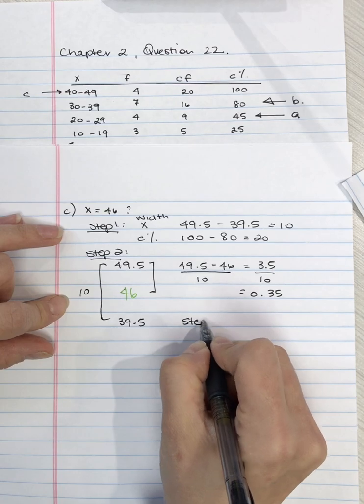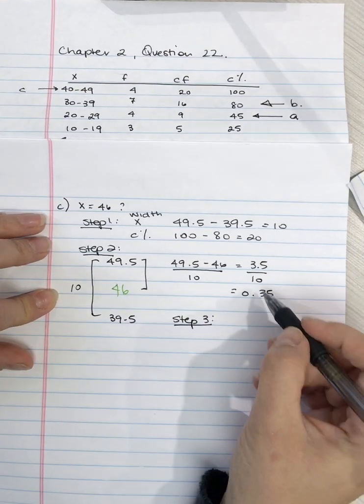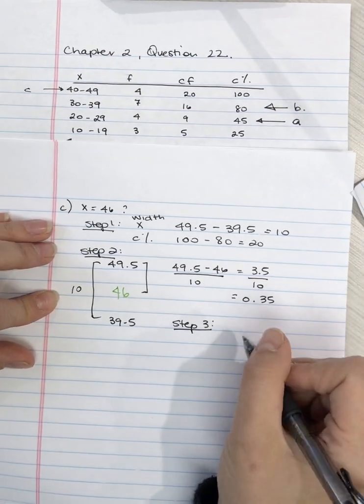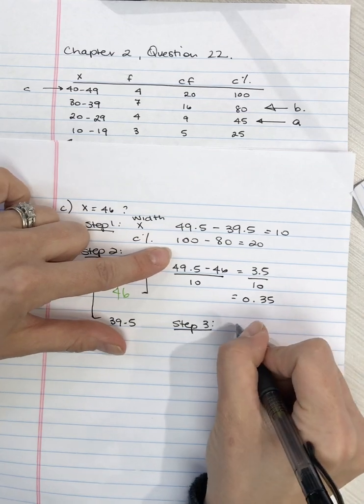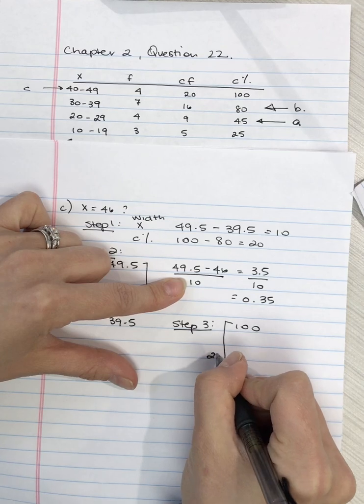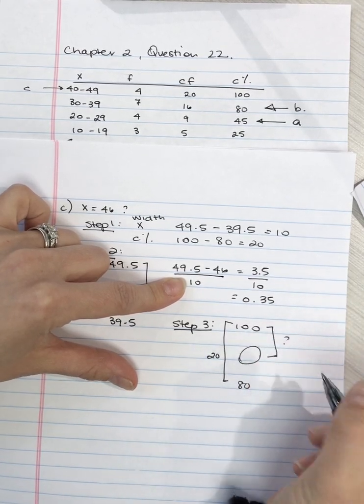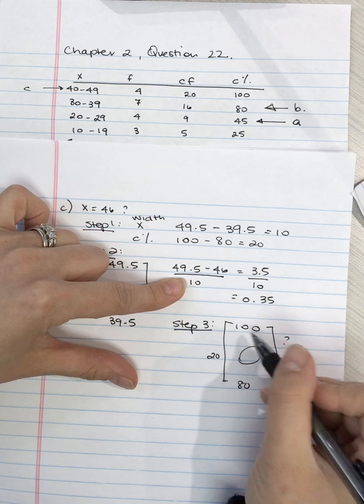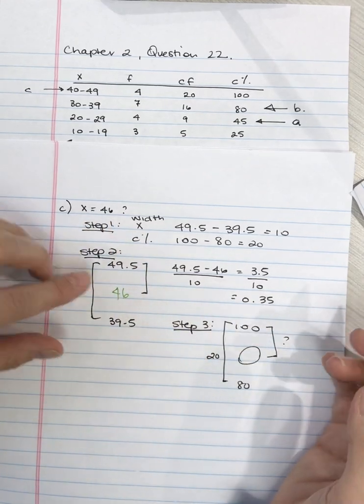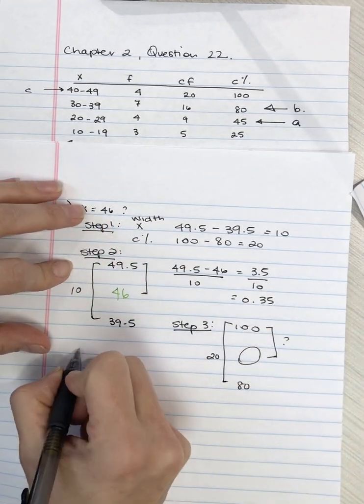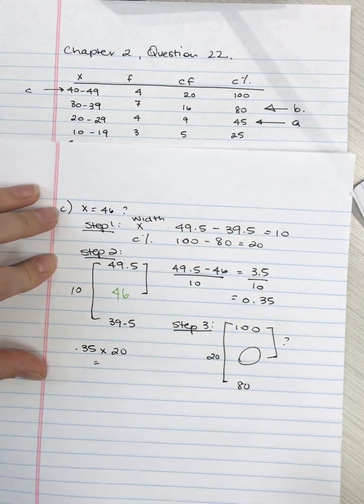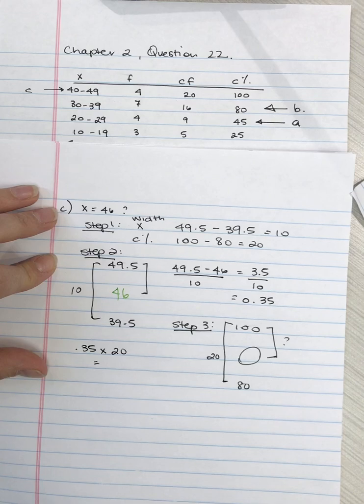Step 3 we want to find proportionally 0.35 of 20 because 20 is our interval width. So we have 100 the bottom is 80 so this is overall 20 we want to find out how far down from 100 do we need to go if we go down 35% of that or 0.35 proportionally. So we take 0.35 and we multiply it by 20 which is our interval width and that gives us 7.